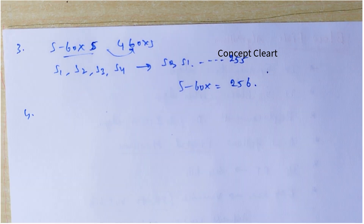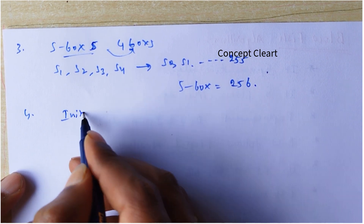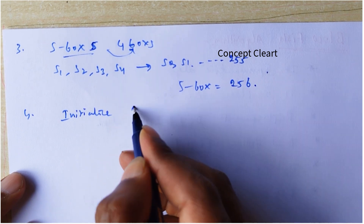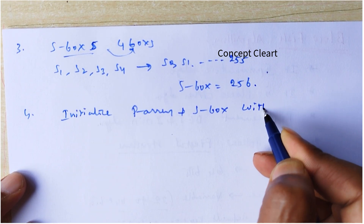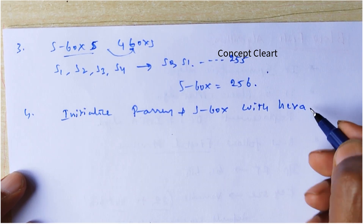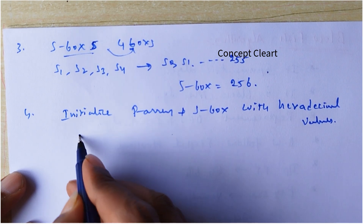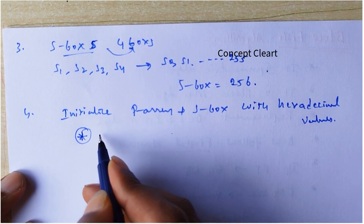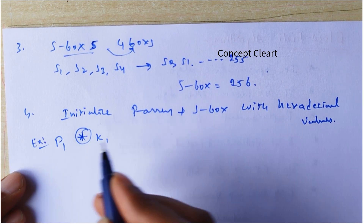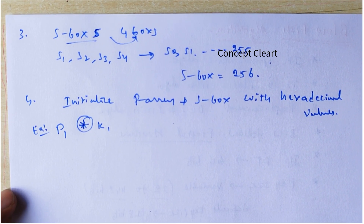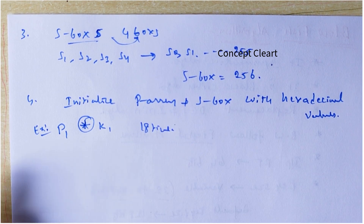Step four: initialize each element of the P-array and S-boxes with hexadecimal values. You have to initialize the P-array and S-boxes with hexadecimal values, and then perform XOR operations between P and K values, not only 18 times but as required.